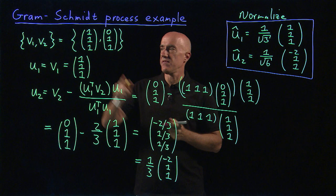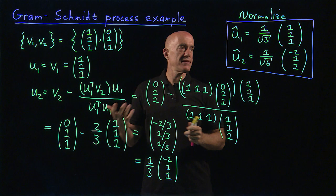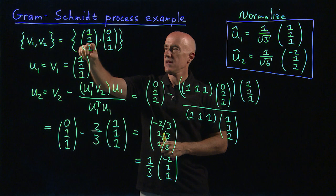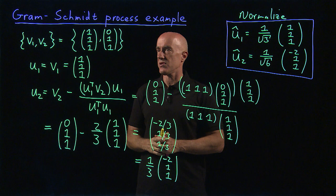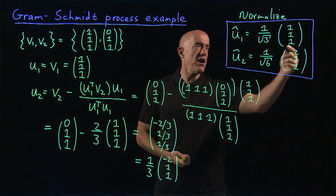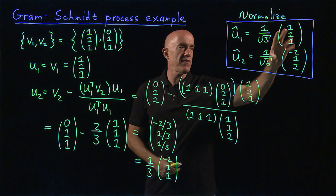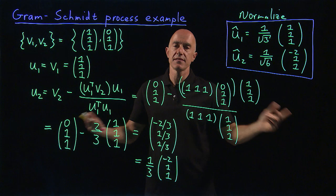This basis V1 and V2 span the same vector space as this basis U1 hat and U2 hat. You can see the defining feature of this vector space is that the second component is always equal to the third component of the vector. You multiply the first vector by a constant, add it to the second vector, always the second component equals the third component. Here always the second component equals the third component in the same way. But now we've adjusted the first component so that these two vectors are orthogonal, and then we've normalized them.